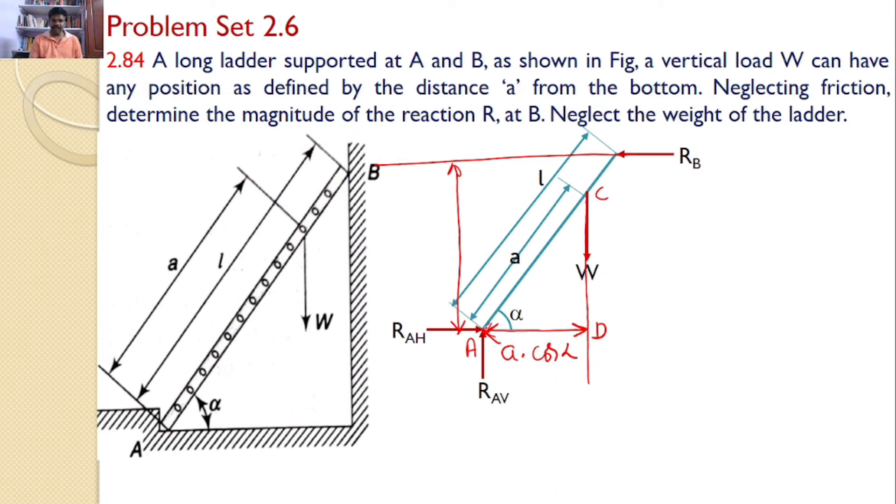And similarly, if you consider this triangle, a big triangle, that is AB and E, ABE triangle, from the ABE triangle, so this angle is alpha. Hence, AE distance, I can say it is L into sin alpha.